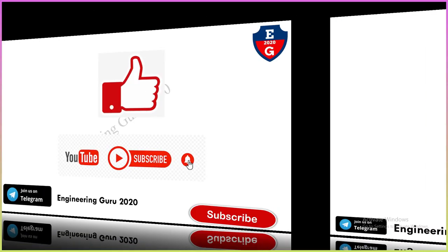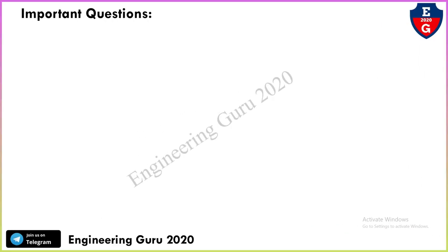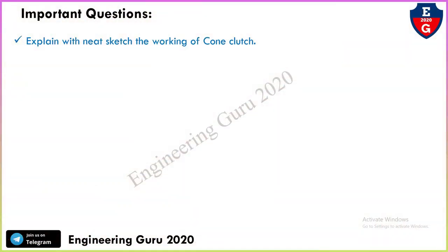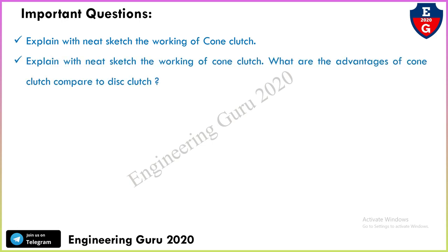One important thing: there is an important question that may be asked in your university exam. The question may be: 'Explain with a neat sketch the working of a cone clutch.' Or it may ask: 'Explain with a neat sketch the working of a cone clutch. What are the advantages of a cone clutch compared to a disc clutch?'